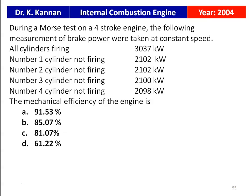The next question is from the 2004 question paper. During a Morse test on a 4-stroke engine, brake power measurements at constant speed were: all cylinders firing: 3037 kW; cylinder 1 not firing: 2102 kW; cylinder 2 not firing: 2102 kW; cylinder 3 not firing: 2100 kW; cylinder 4 not firing: 2098 kW. The mechanical efficiency of the engine — with four options given (91.53, 85.07, 81.07, 61.22) — the answer is 81.07 percent.